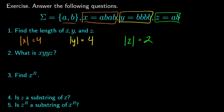Next, what is the concatenation xyyz? We start with x: a, b, a, b. Then y twice: b, b, b, b, b, b, b, b. Then z: a, b. So xyyz = a, b, a, b, b, b, b, b, b, b, b, b, a, b.